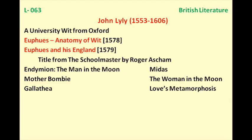So those were all the important works of John Lily. Remember that he never wrote any tragedy — he wrote only comedies. His important works are Euphues: The Anatomy of Wit and Euphues and His England. From 'euphues' we have the term 'euphuism,' and the title was taken from Roger Ascham's Schoolmaster. Also remember: Endymion is both a play by John Lily and a poem by the Romantic poet John Keats. Thanks for watching and have a great day.